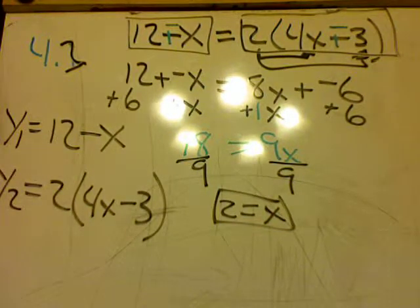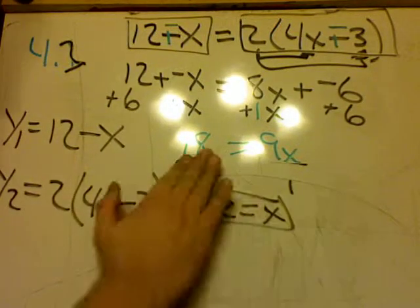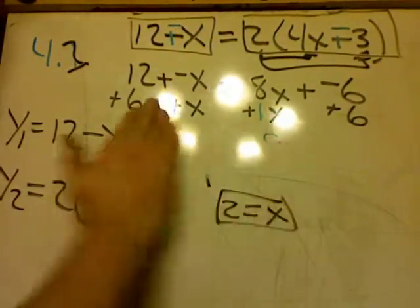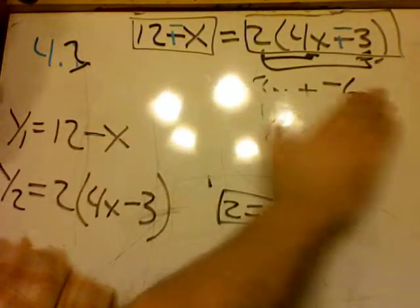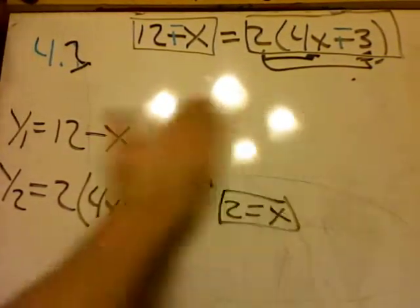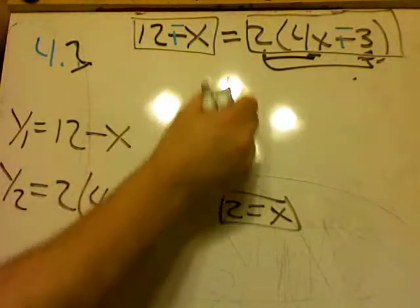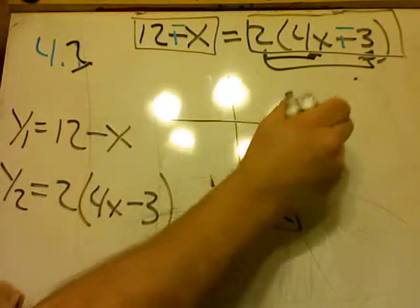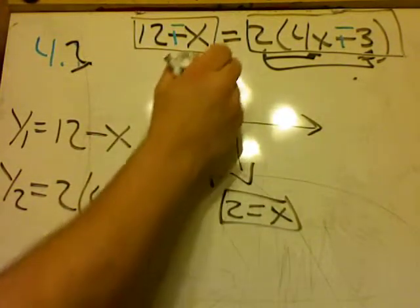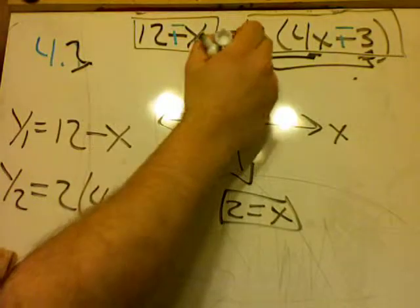Now, after I have that, I'm going to go ahead and hit the graph button. Now, after I hit the graph button, I might have to adjust my window. Remember, our window is just like the window in your house. It lets you see any particular instance on that graph. I've got x and y values.